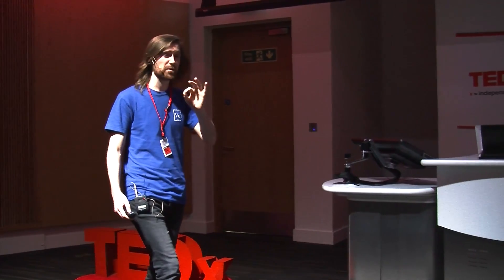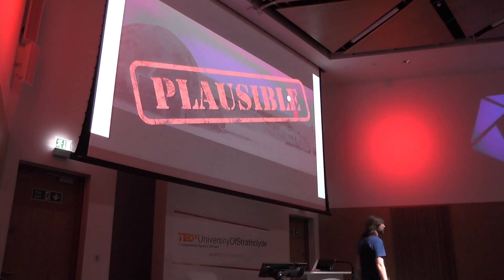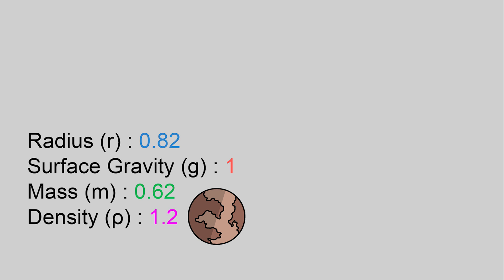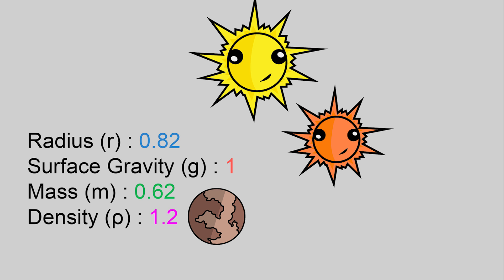Tatooine is, for the most part, scientifically plausible. It is 0.82 times the size of Earth. Its surface gravity is exactly equal to Earth. Therefore, its mass is that, and its density is that. It orbits two scientifically plausible stars, whose masses are that. And it does so in 304 Earth days.